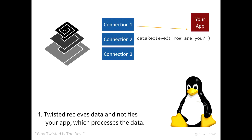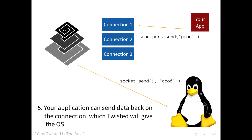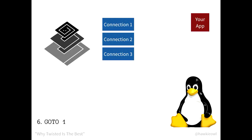What Twisted will do is take that and process it: it'll receive the data and notify your app. It'll do all of the reading for you, and when your application writes, it'll handle the caching and wait until it's ready. Your application can then respond to that data, send stuff back, and Twisted will dutifully send it back to the operating system to send on sockets. It essentially repeats that all again, over and over.